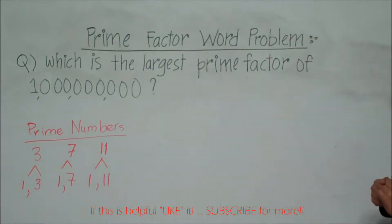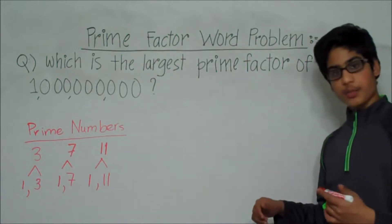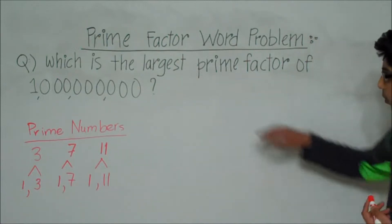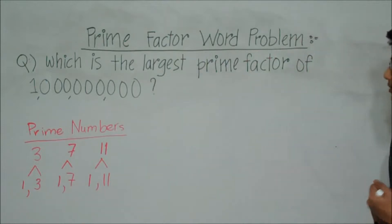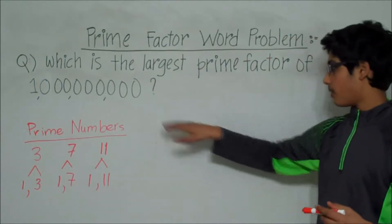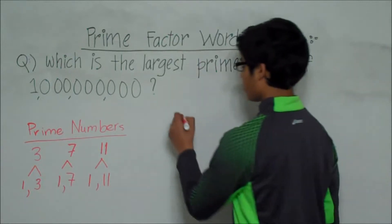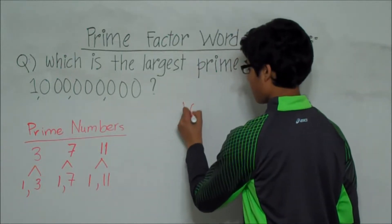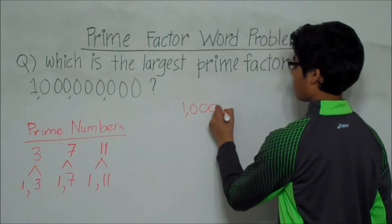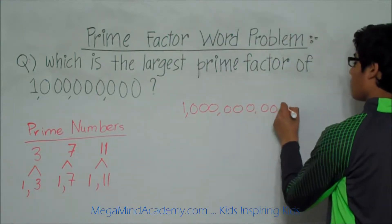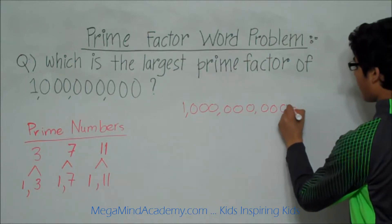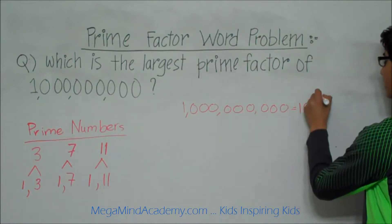Now we need to find out which is the largest prime factor of 1 billion. Let's write 1 billion as an exponent with a base of 10. 1 billion can be written as 10 to the 9th power.